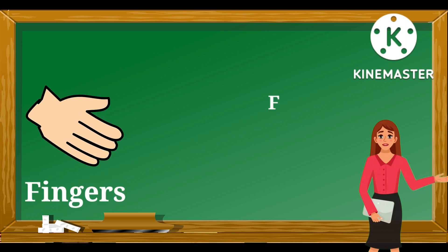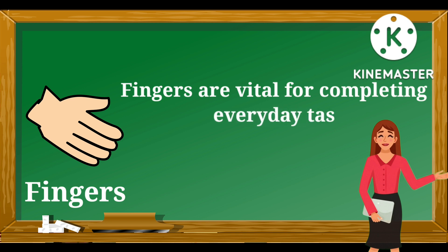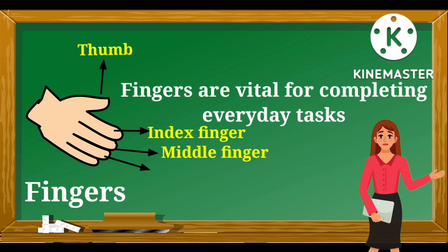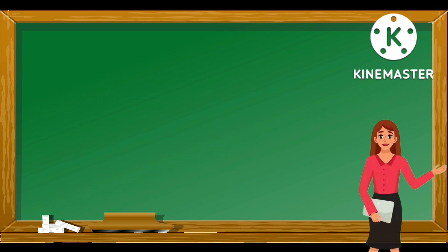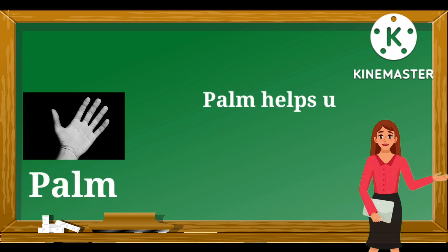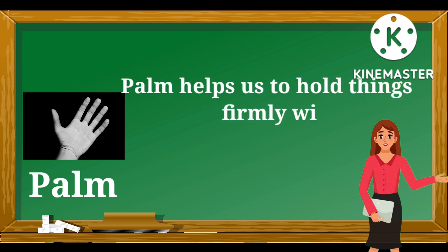These are fingers — F-I-N-G-E-R-S. Fingers are vital for completing everyday tasks. We have five fingers on our hand: the thumb, index finger, middle finger, ring finger, and little finger. Fingers help us to hold things firmly. This is a palm — P-A-L-M. The palm helps us to hold things firmly without sliding.